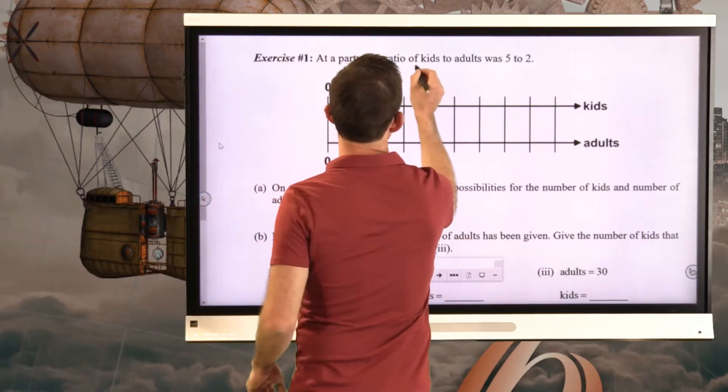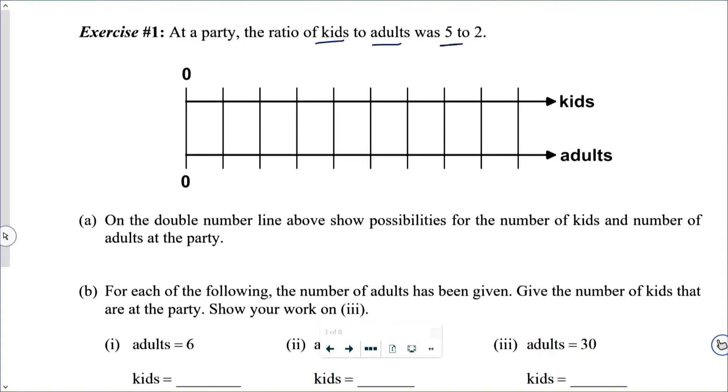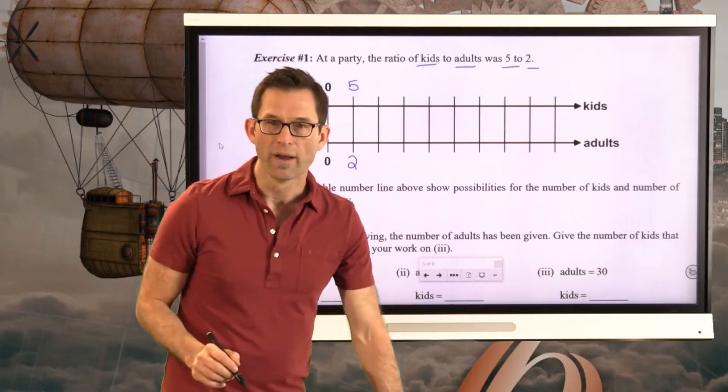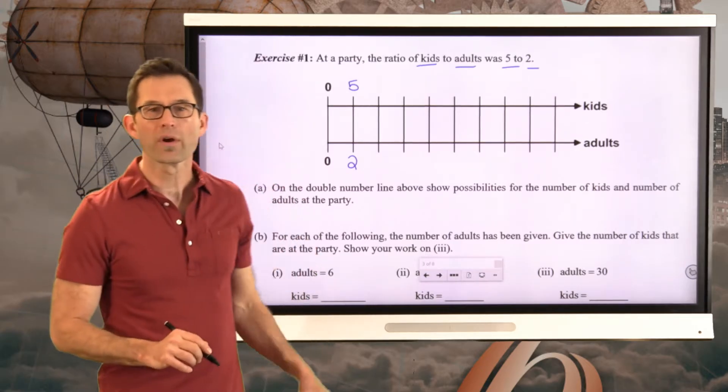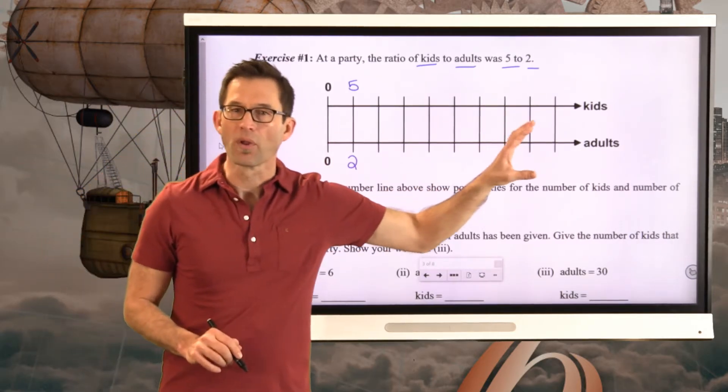So what do we know? We know the ratio of kids to adults was 5 to 2. That means if there are 5 kids, there are 2 adults. That's just what it means. And now we're going to really build these two number lines.